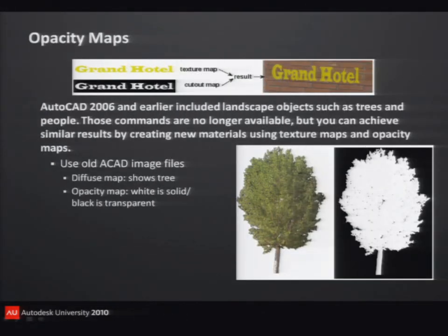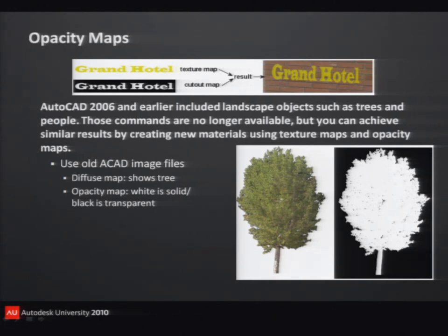Here's where I can take those old landscape objects that used to come in AutoCAD — the trees. I've got an image of the tree itself and a cutout map of the tree. Anything that's white will be opaque, anything that's black will be transparent, so I'll be able to place a tree in the model and see through the leaves, see around it. Or I can create a sign for my hotel. I've got the image of the letters, and then I've got a cutout map — where it's white it's solid, where it's black it's transparent. That's how I'm able to make this look like individual letters on my brick wall.